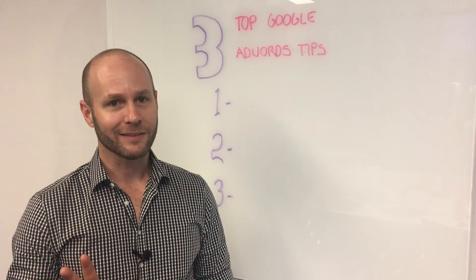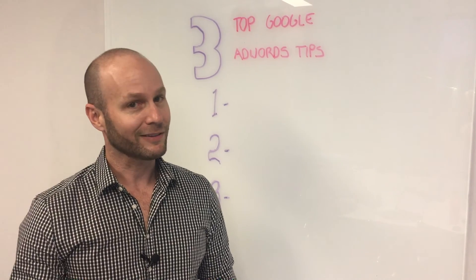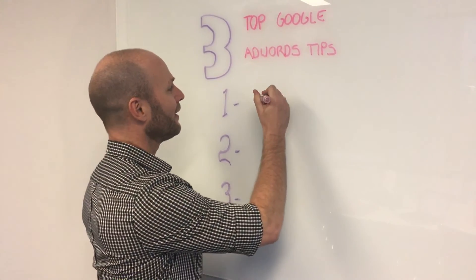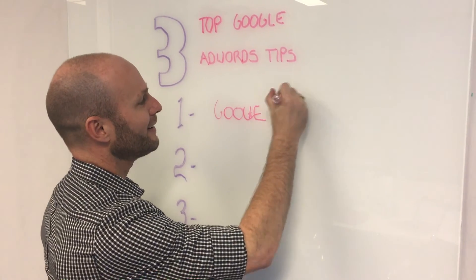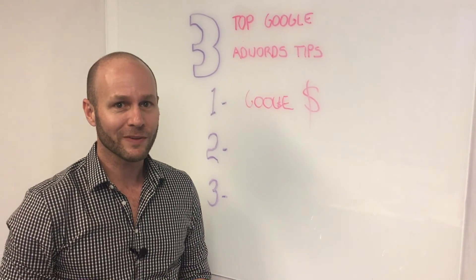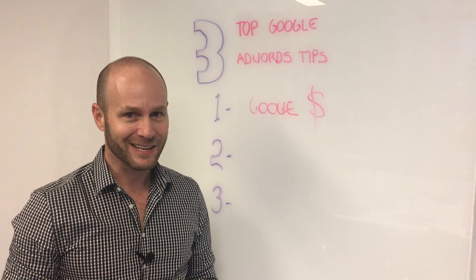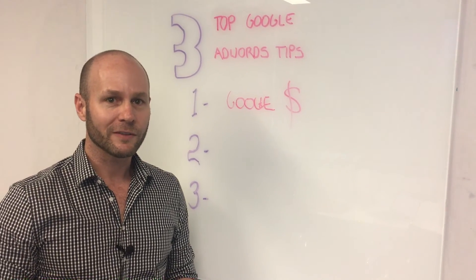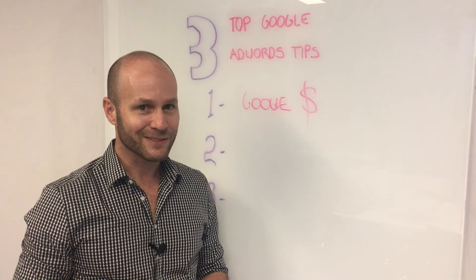There are a couple of things that are really important to understand with AdWords. The first one is that Google AdWords is set up to make Google money. The default settings in Google AdWords are always going to be geared towards Google making extra money. It's just like a poker machine — the house always wins. So you've got to make sure that you go in there and tune up Google AdWords to suit your clients and your requirements. Make sure you don't use the default settings.